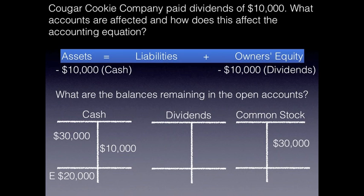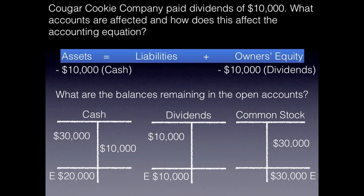It says we paid dividends. Paying dividends does decrease owner's equity because you're reducing retained earnings, but you also have to think about what's happening to the dividends account. The dividends account balance is actually increasing because you've paid more dividends — and dividends increases with a debit. So now we have a debit balance in our dividends account of $10,000. Common stock was not affected in this problem, so we carry down our balance of $30,000. The final step: all debits must equal all credits. Cash has a debit balance of $20,000, dividends has a debit balance of $10,000, giving total debit balances of $30,000. Common stock has a credit balance of $30,000. Debits of $30,000 equal credits of $30,000.